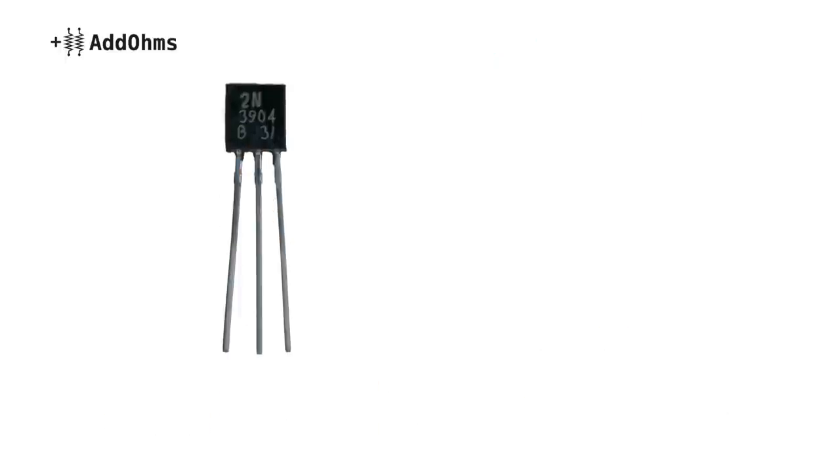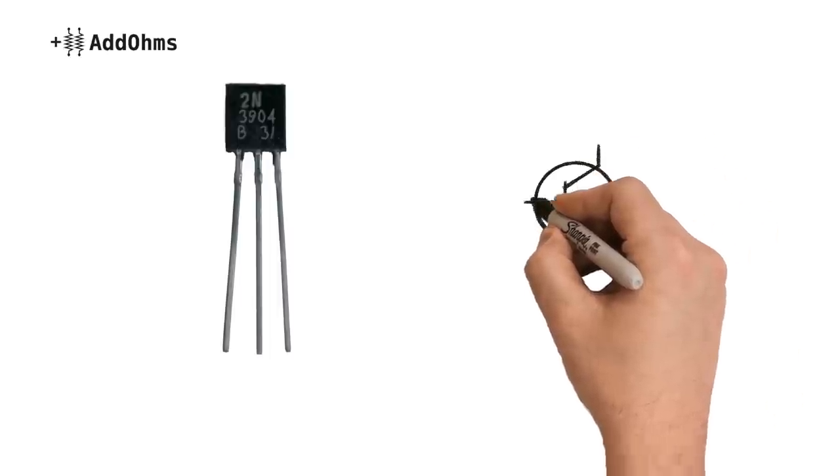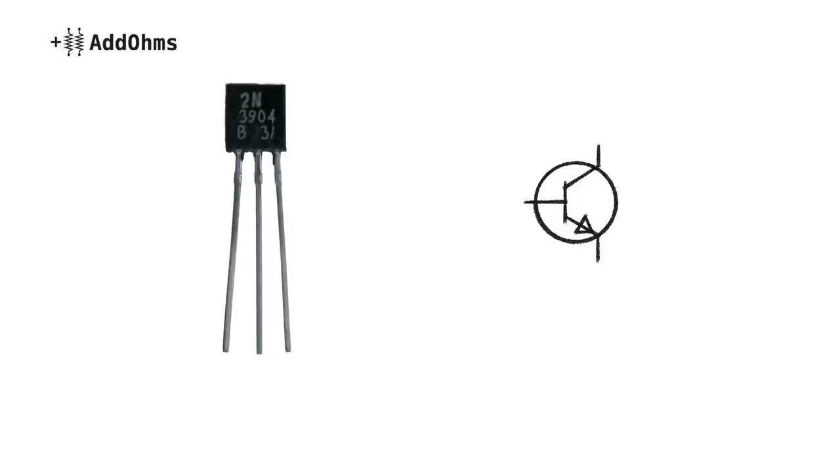Here's an example of a TO92 package and the symbol for an NPN BJT. There are three terminals which have the names emitter, base, and collector.